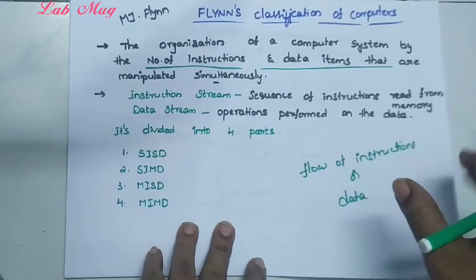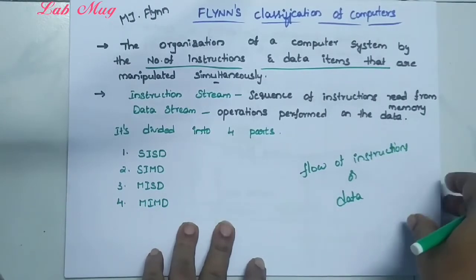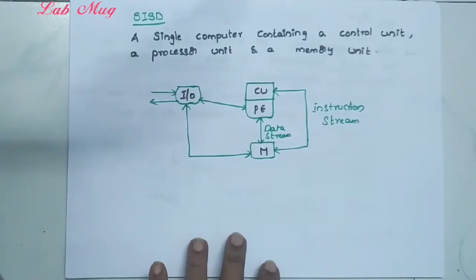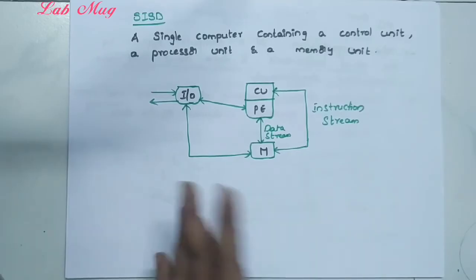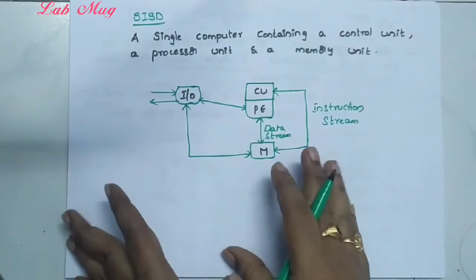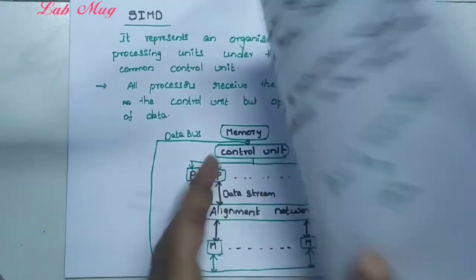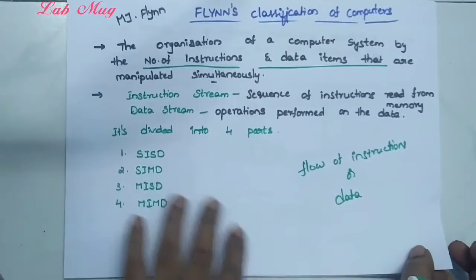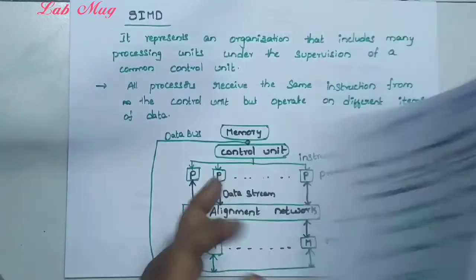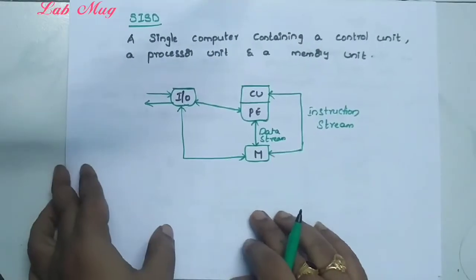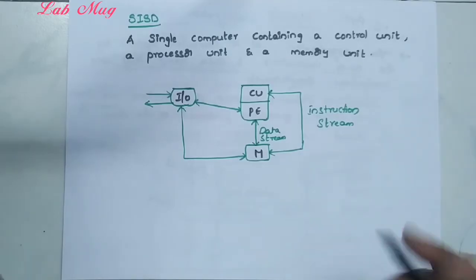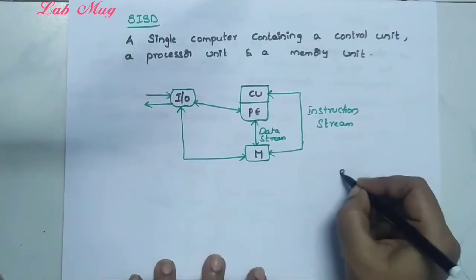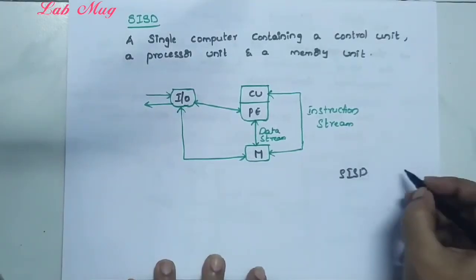These four categories show how a computing device performs instructions. Let's draw a simple diagram. For Single Instruction Single Data, let's draw the diagram here. SISD — Single Instruction Single Data.